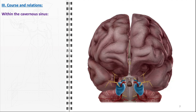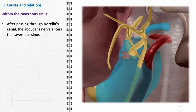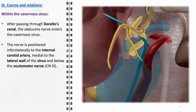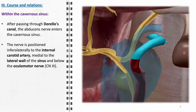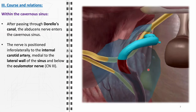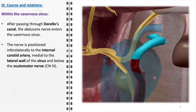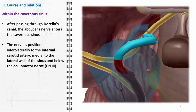Within the cavernous sinus, the course of the abducens nerve is both complex and clinically significant due to its unique positioning and the potential implications of its anatomical relationships. After navigating through Dorello's canal, the abducens nerve enters the cavernous sinus at the base of the brain. In the cavernous sinus, the abducens nerve assumes a distinctive position, situated infralaterally to the internal carotid artery. This relationship is of particular importance as it places the nerve in close proximity to a major blood vessel, making it susceptible to vascular pathologies such as carotid artery aneurysms or arteriovenous malformations.